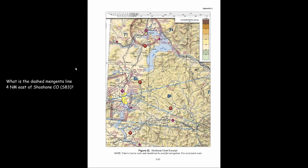What does the dashed magenta line four nautical miles east of Shoshone COS83 indicate? First we find Shoshone COS83 airport, located here. To measure four nautical miles we use the graph at the top. The dashed magenta line indicates magnetic variation, which is used for navigation between true north and magnetic north.